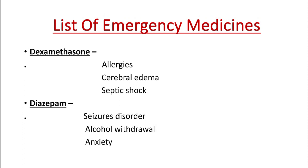The first emergency drug is dexamethasone. The functional class of dexamethasone is corticosteroid. It decreases inflammation by suppression of migration of leukocytes and fibroblasts. The uses of dexamethasone are allergies, cerebral edema, and septic shock.